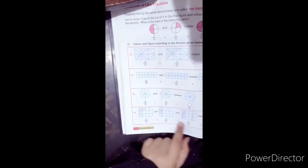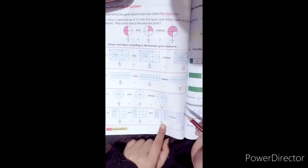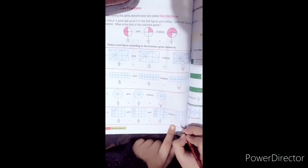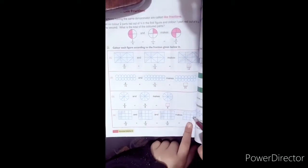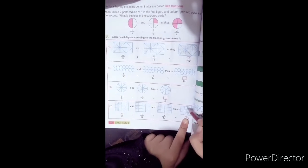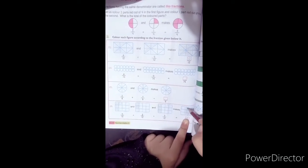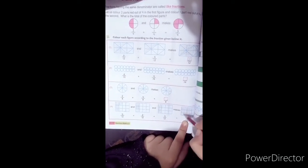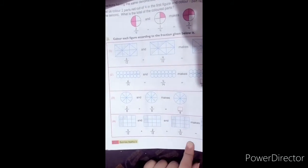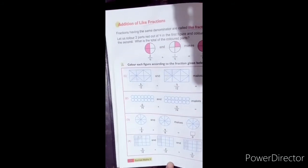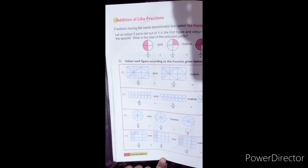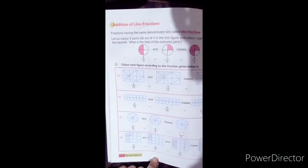4 and 2 make 6, 6 and 3 make 9. It means that we have 9 blocks out of 12. We will color 9 blocks. The rest of the 3 are remaining because we colored 9 parts. I hope students you understand how to add fractions.